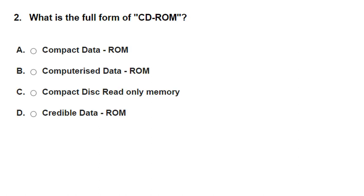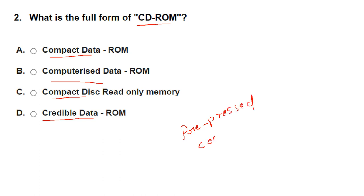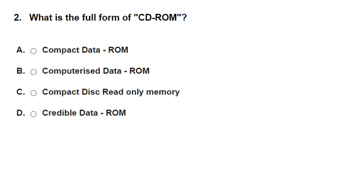What is the full form of CD-ROM? Options: compact data ROM, computerized data ROM, compact disc read only memory, and credible data ROM. A CD-ROM — compact disc read only memory — is a pre-pressed optical compact disc that contains data. A computer can read but not write or erase a CD-ROM, making it a type of read only memory. The correct answer is option C — CD-ROM stands for compact disc read only memory.